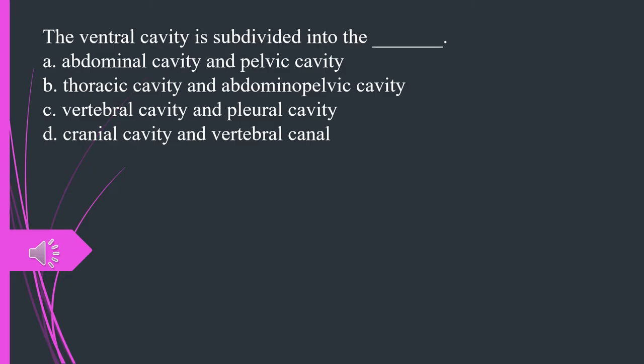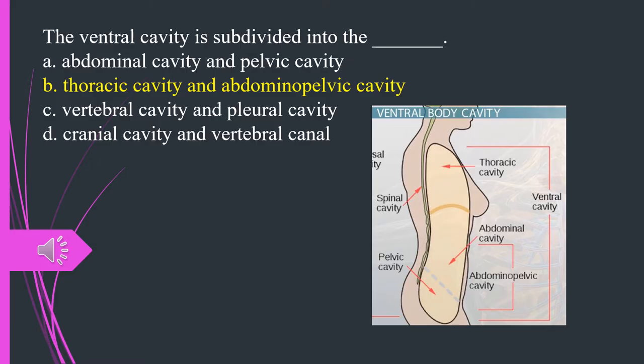The ventral cavity is subdivided into, A. Abdominal cavity and pelvic cavity. B. Thoracic cavity and abdominopelvic cavity. C. Vertebral cavity and pleural cavity. D. Cranial cavity and vertebral canal. The answer is B. Thoracic cavity and abdominopelvic cavity.